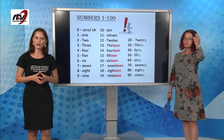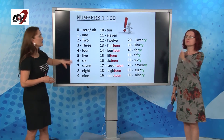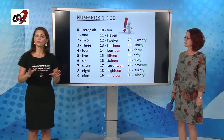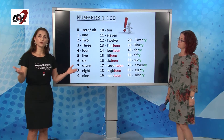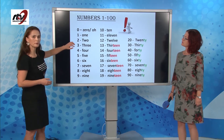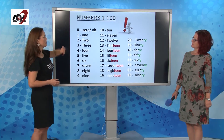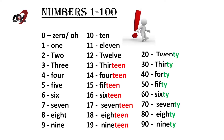Now we are going to revise numbers. If you already know them, it's an excellent way to revise them. But if you do not know them, it's a good opportunity to learn them. Now let's begin. Zero — native speakers usually pronounce it 'O', especially in phone numbers. One, two, three, four, five, six, seven, eight, nine, ten, eleven, twelve.